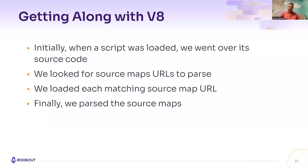When we first started out a couple of years ago, when a script was loaded, we went over its source code. We looked for URLs pointing to related source maps, then we loaded each source map URL and parsed it. That is a lot of work, both for loading the source file and for looking for the URLs of different source maps. Think about how much I/O work we are doing here — loading the source files only to look for the source map URLs. Source files can be huge, and we are spending a lot of time going over each line looking for URLs.